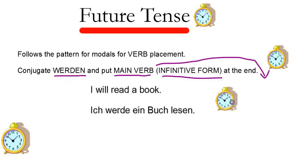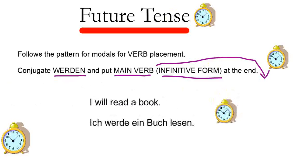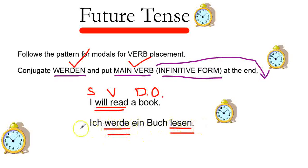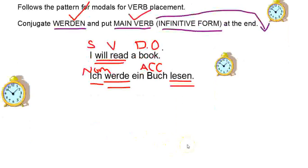For example, 'I will read' — subject 'I', verb 'will read', direct object 'book'. In German: 'ich werde ein Buch lesen.' We conjugate 'werden' as 'werde', and the main verb 'lesen' goes to the end. The subject 'ich' is nominative, and 'ein Buch' is accusative.